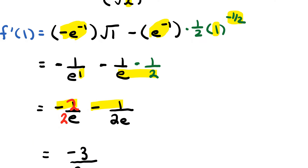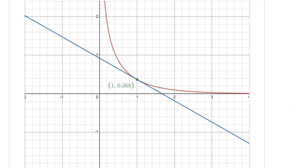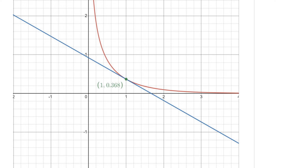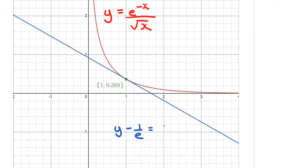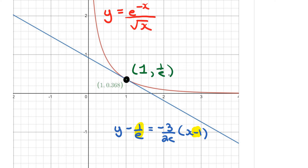Let's show a visual from Desmos of what we just found. The graph highlighted in red is the original function y equals e to the power of negative x divided by the square root of x, and the tangent line is the equation we just found: y minus 1 over e equals negative 3 over 2e times bracket x minus 1. We're tangent at the point 1 comma 1 over e — that's the point of tangency on that graph.